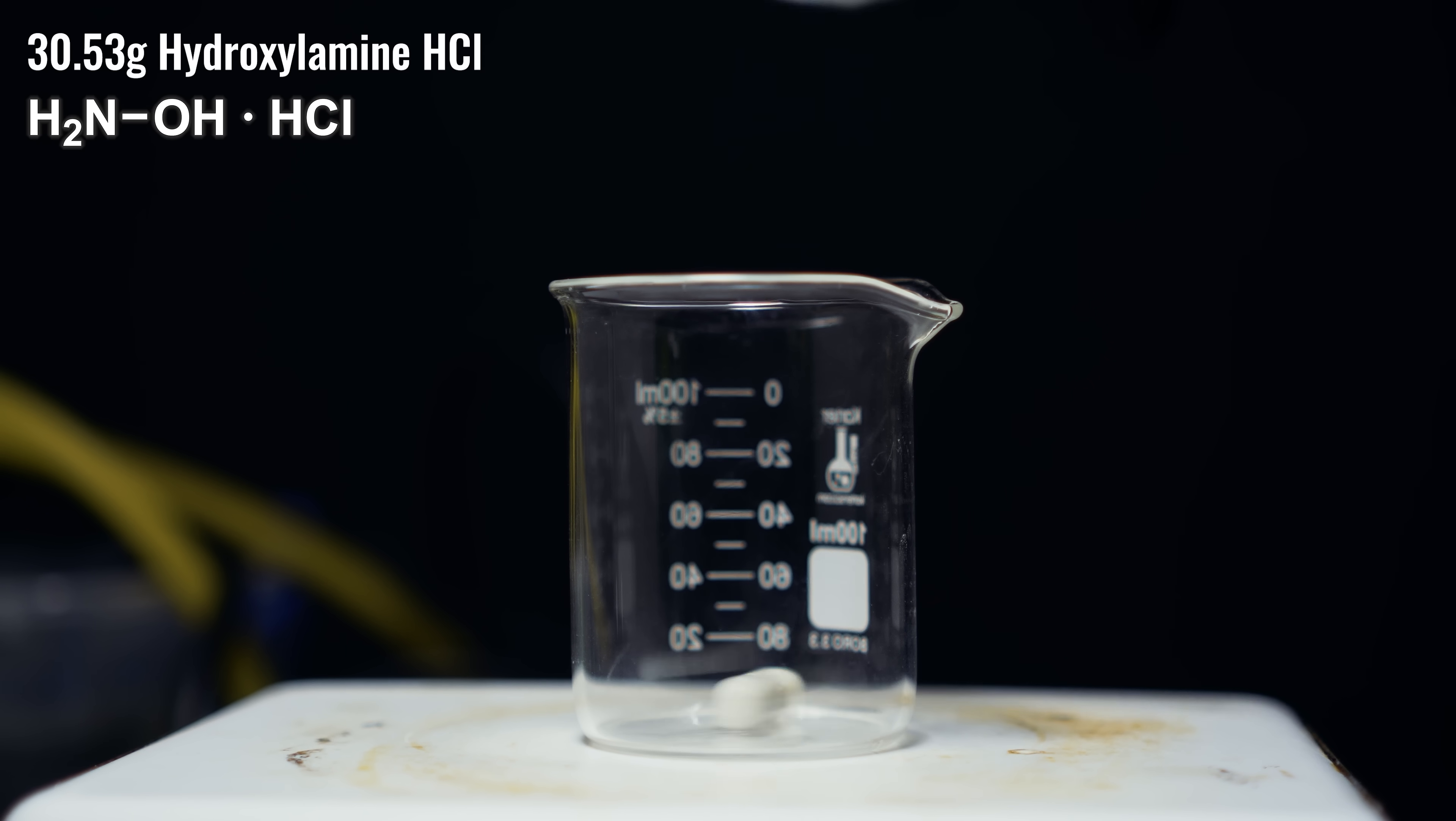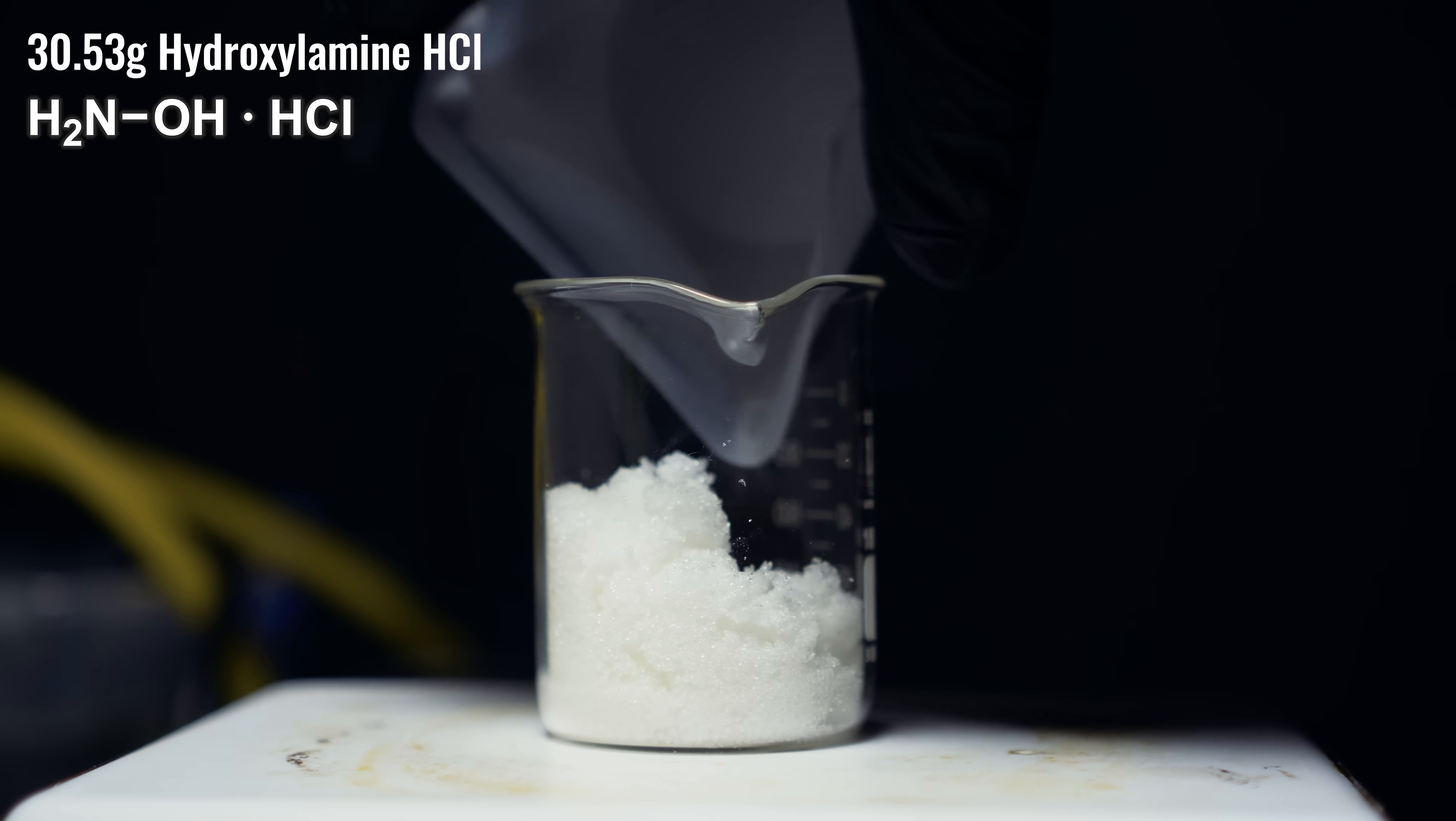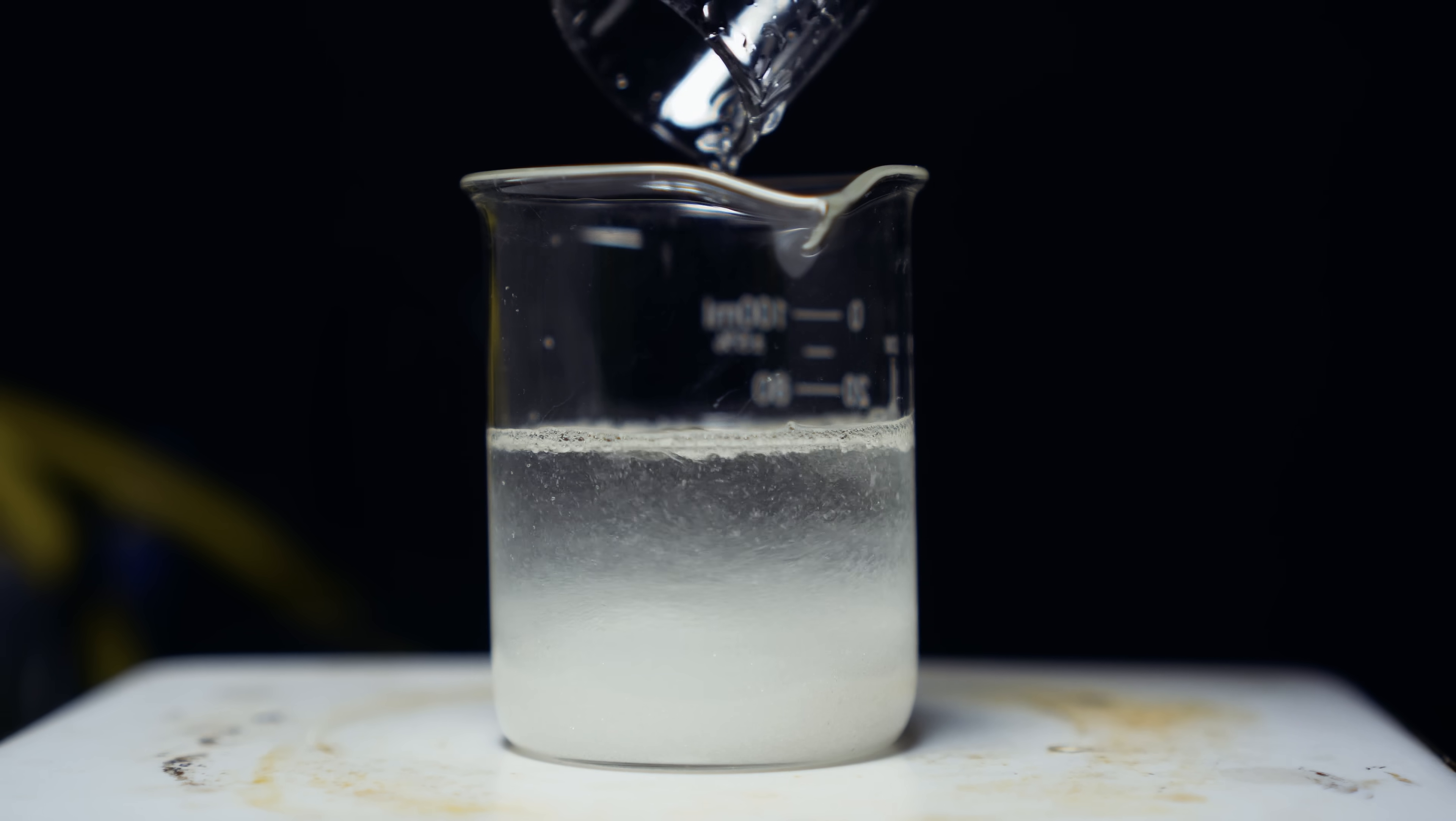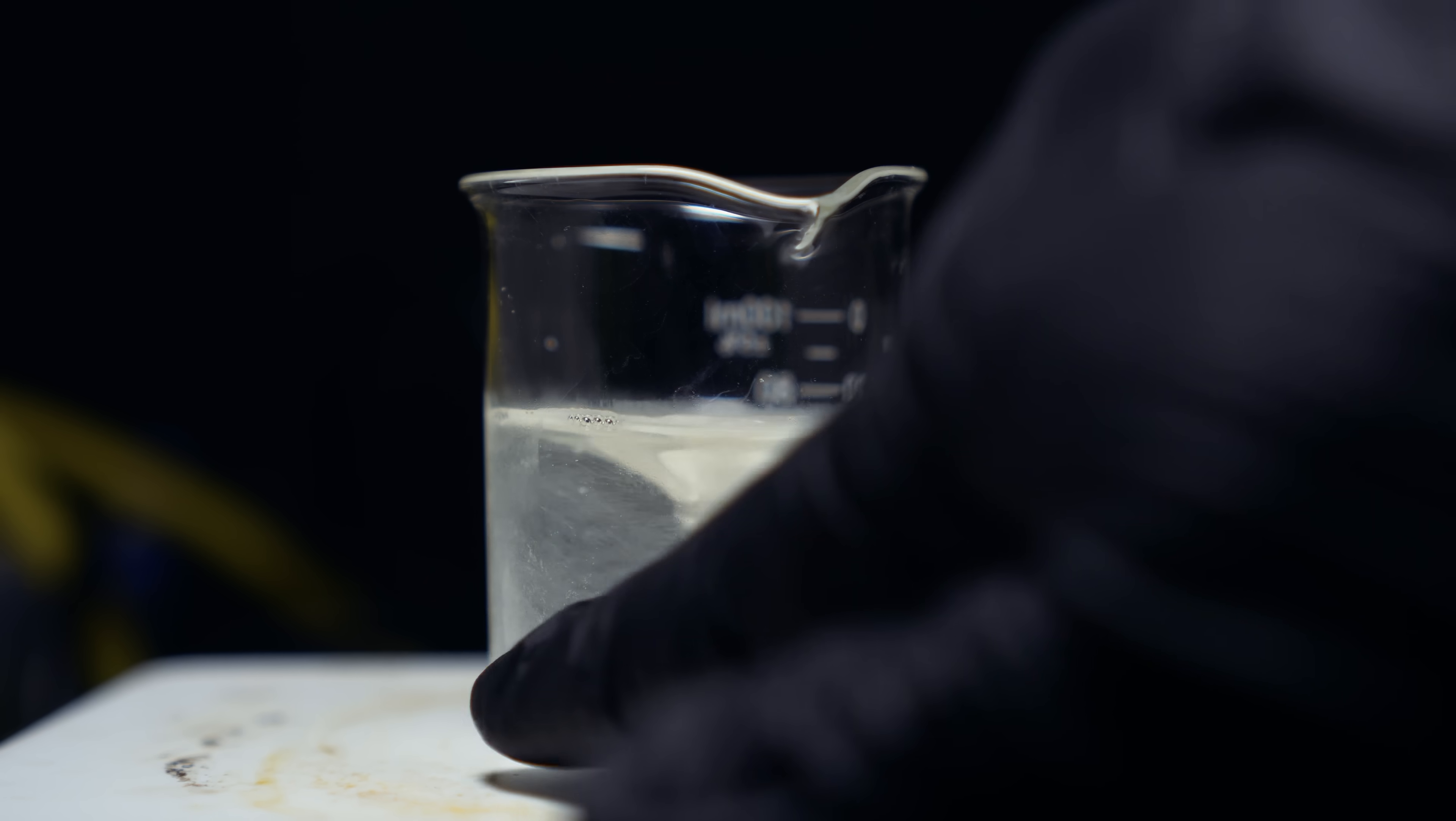To get started, we need 30.53 grams of something called hydroxylamine hydrochloride. This is also an extremely hygroscopic material, which pulls moisture from the air. To this, we're going to add 50 milliliters of distilled water. The dissolution of hydroxylamine hydrochloride is actually endothermic in water. Let me explain this. Lattice energy is the energy needed to break ionic bonds. And when we dissolve this, it actually uses more energy to break these bonds than it releases. And that makes this process endothermic.